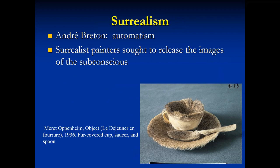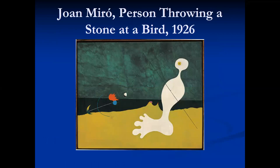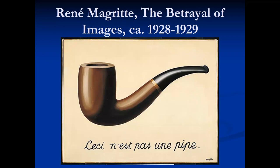Meret Oppenheim's fur-covered cup, saucer, and spoon is an image that would be seen in imagination or dreams, but probably not in reality. Salvador Dalí's The Persistence of Memory is an example of surrealist work: the images of melting clocks, swarming ants, and a distorted image of Dalí's own eye represent the altered reality and symbolism that can be experienced in our dreams. Joan Miró's Person Throwing a Stone at a Bird contains abstract, dreamlike images. René Magritte challenges our perception of reality with The Treachery of Images — the French text reads 'This is not a pipe.'